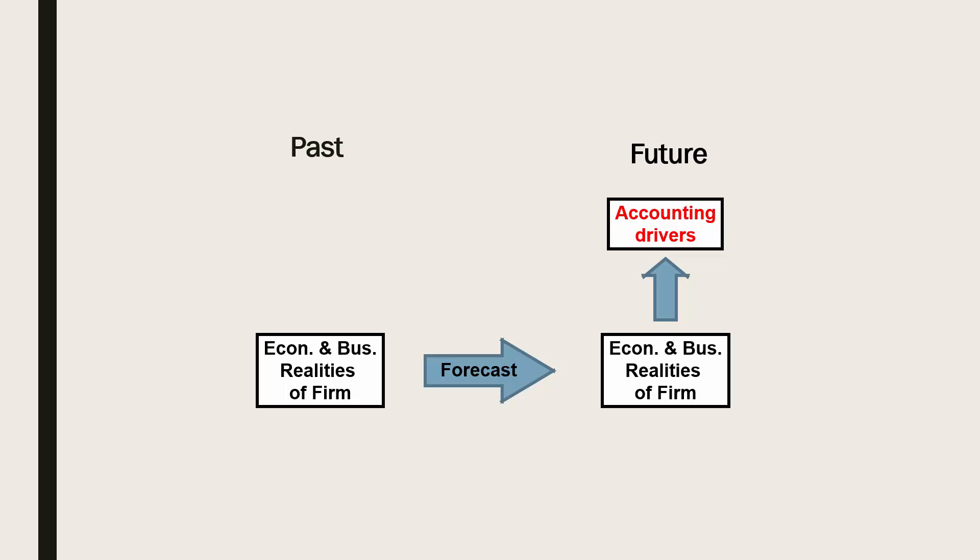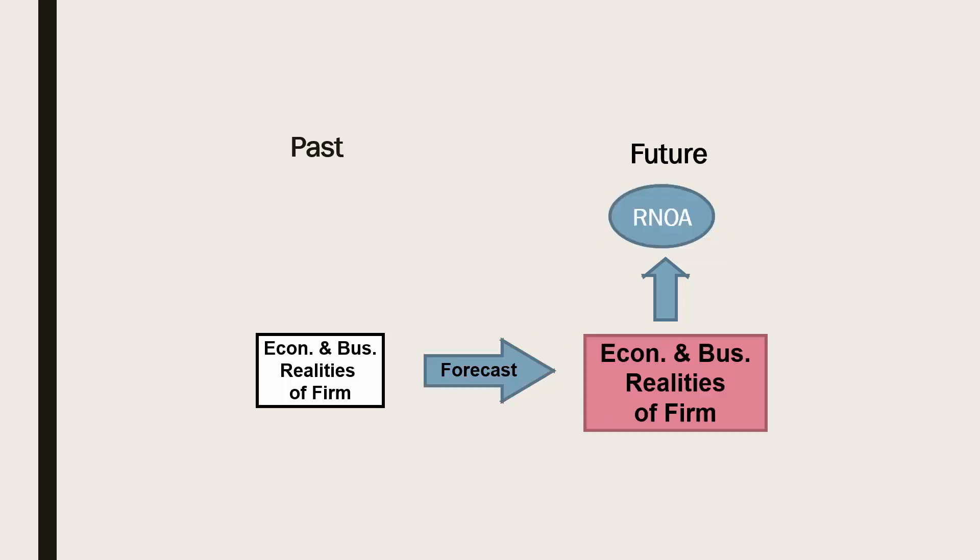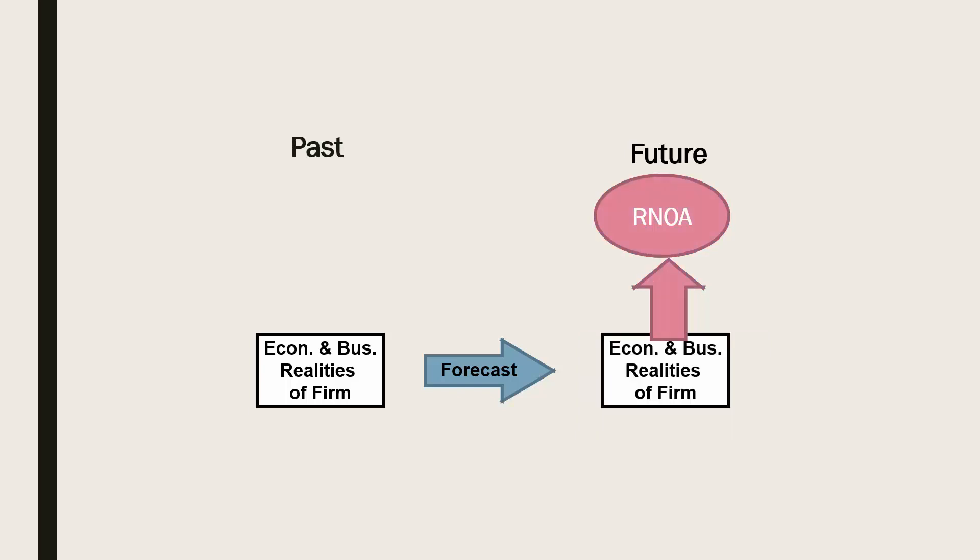For example, to forecast our firm's return on net operating assets, we first need to forecast the economic and business drivers of our firm's return on net operating assets. We then need to estimate the effect of these future economic and business drivers of our firm on its future accounting drivers of return on net operating assets. In this way we can turn a forecast of the economic and business drivers of our firm into a forecast of its return on net operating assets.